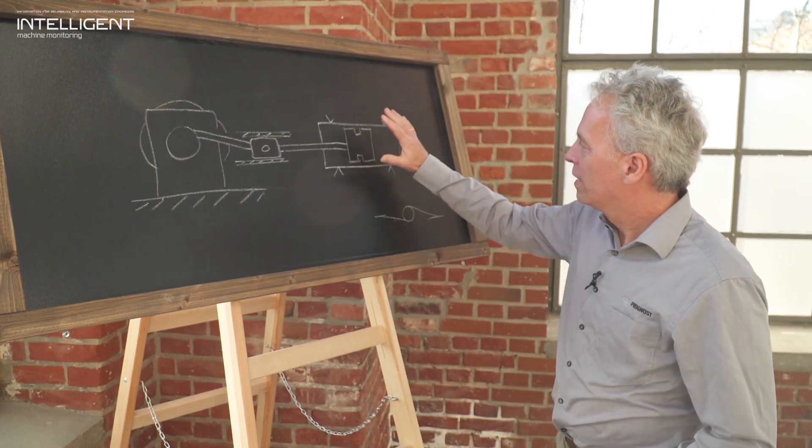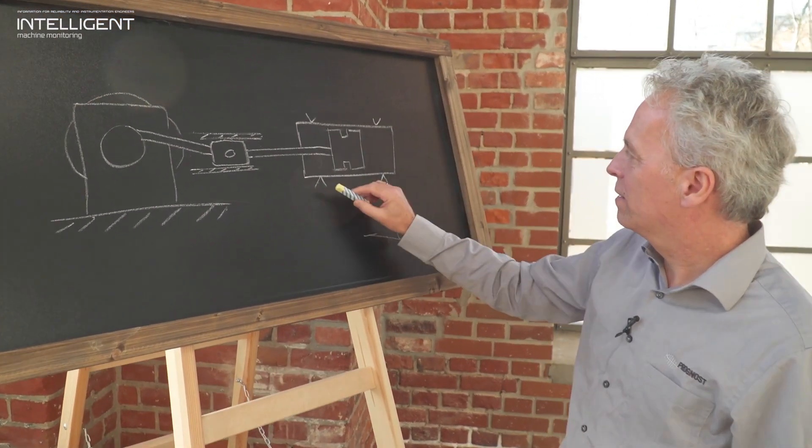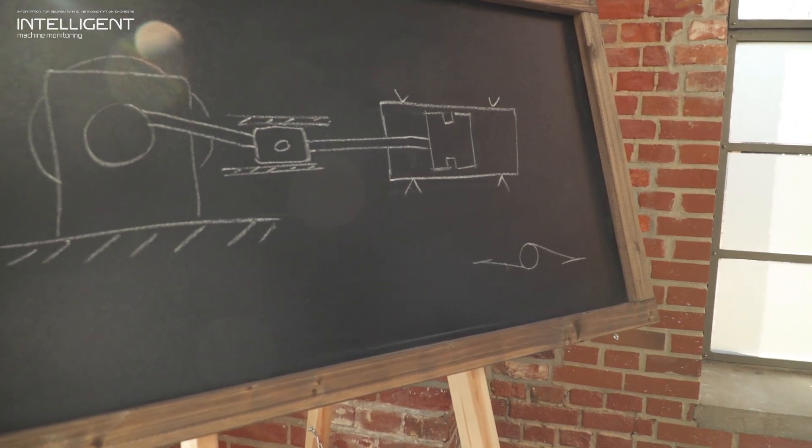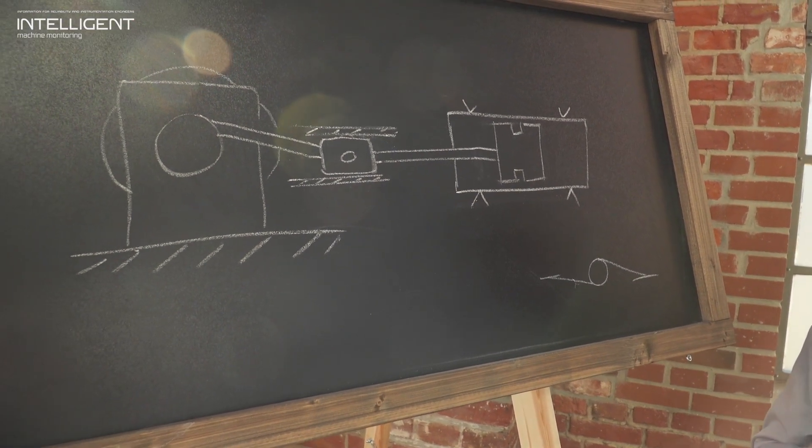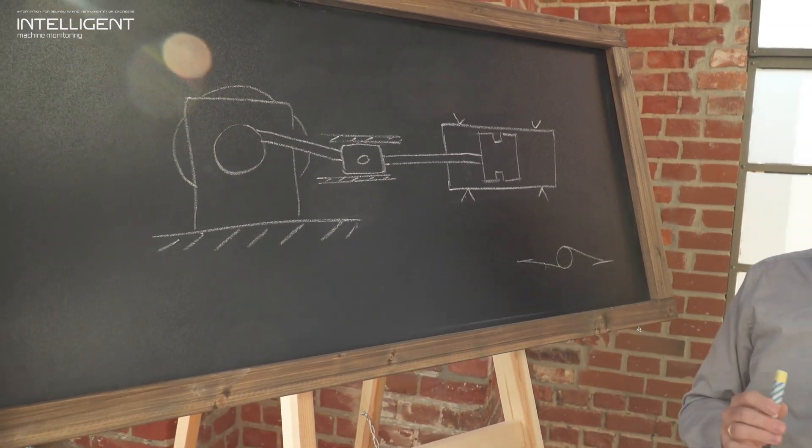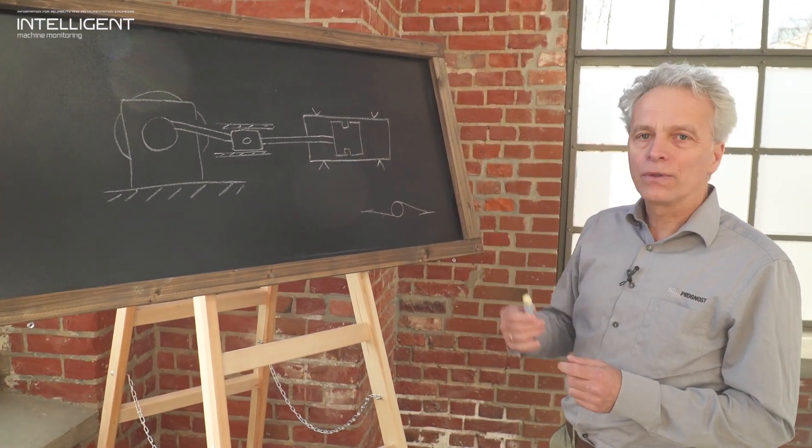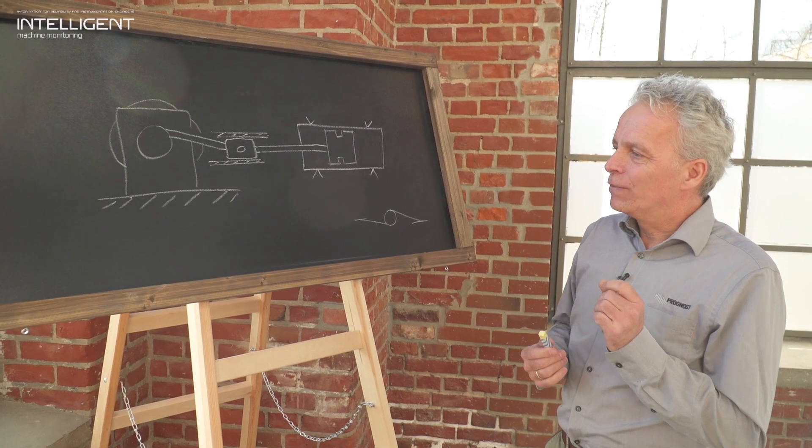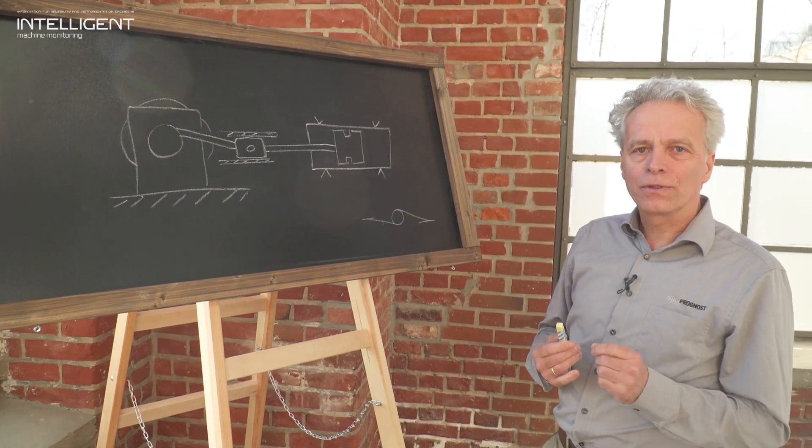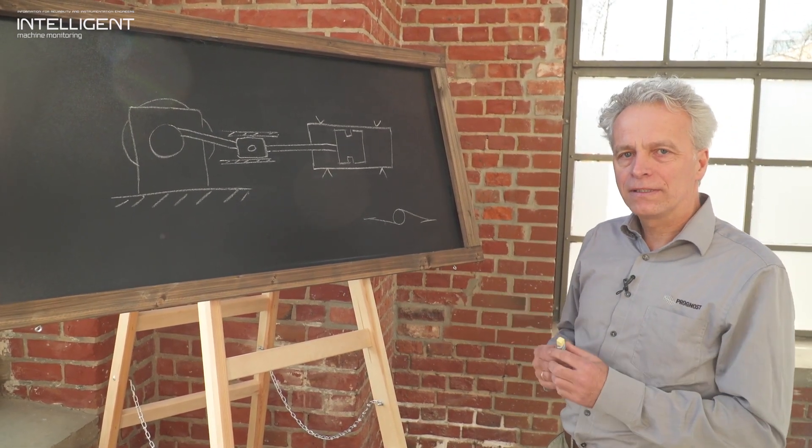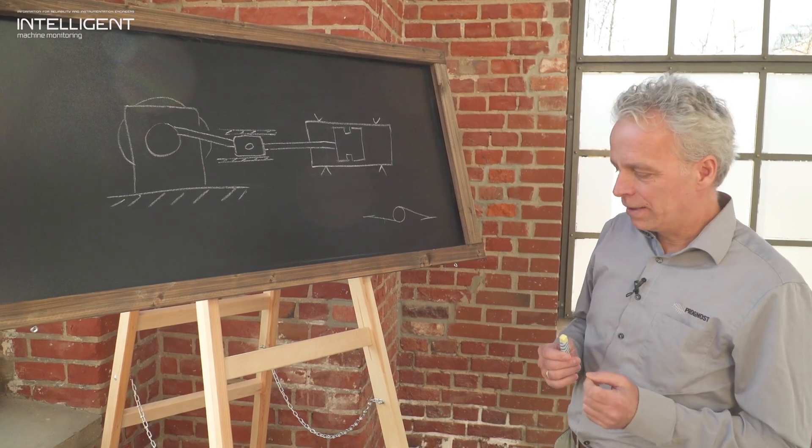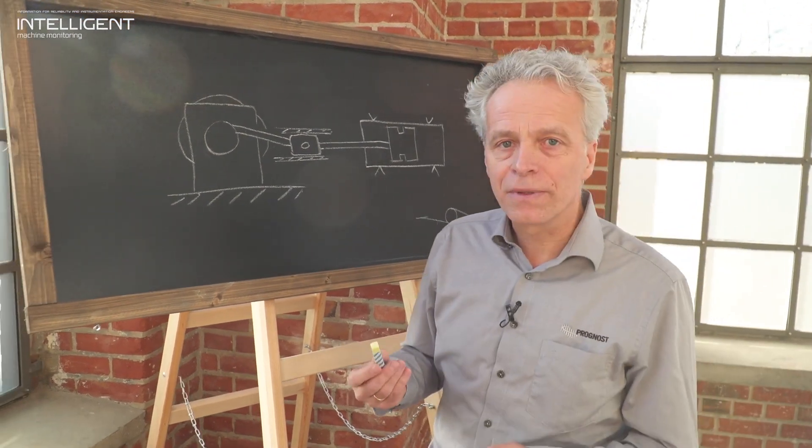Here we have the cylinder with the suction valves and the discharge valves. Now to monitor all the online signals, the dynamic online signals of the sensors that we're going to explain now, we need to reference them to the top dead center of the cylinder. To obtain this, we install a trigger mark at the flywheel and here a trigger sensor which is then installed at the support.